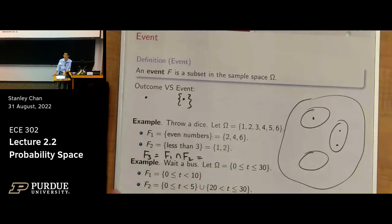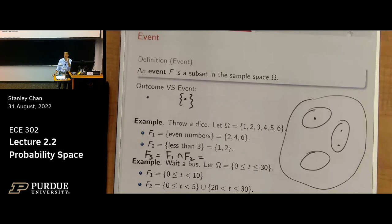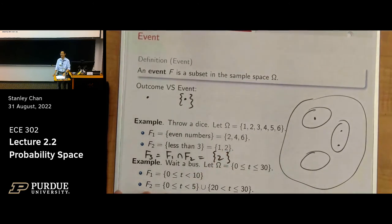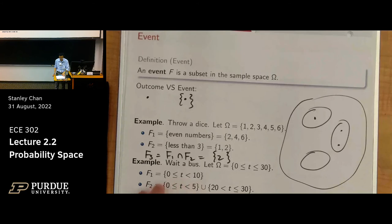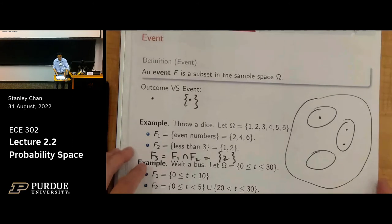If you take F3 = F1 intersect F2, that's another subset inside the sample space — it gives you the set containing just the number 2. Note it is the set {2}, not the number 2 — that is an event. Just writing 2 is a number, an element in the sample space; that's an outcome. Similarly for waiting-time events: F1 could be 0 to 10 minutes, F2 could be 5 to 20 minutes, and you can take their union.